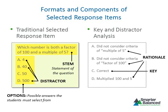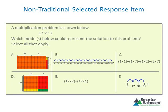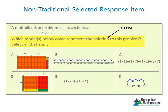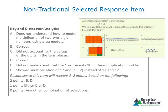It is important that distractors and the key are balanced — no one option should be obviously different from the others. A more complex selected response item may have a stem, stimulus, and six options. The stimulus is the text, source, and/or graphic about which the item is written, providing context for the student. Some items have more than one correct option. The scoring rubric describes how points are awarded — for example, two points for selecting both correct options B and D, one point for selecting only one, and zero for any other combination.